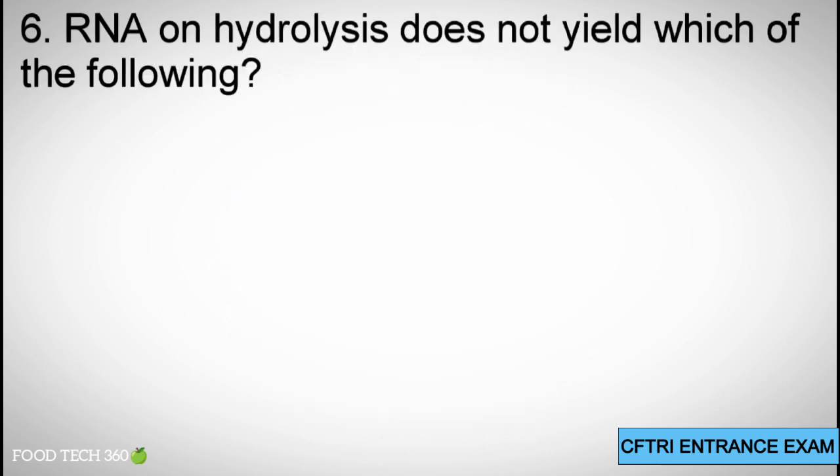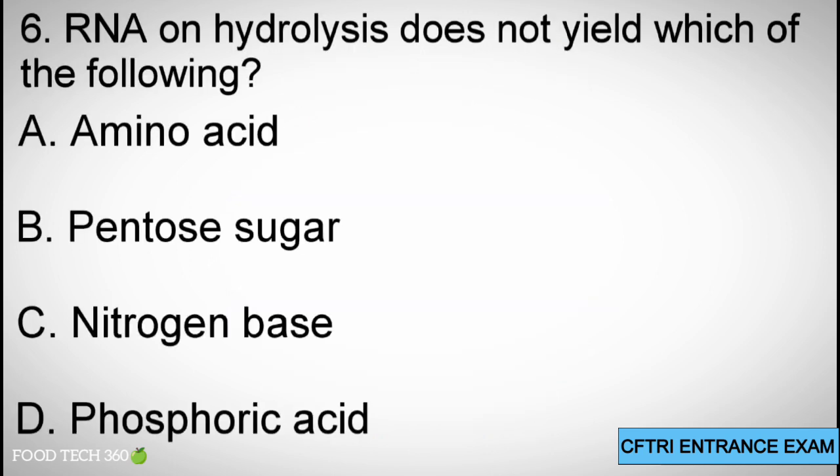Question 6: RNA on hydrolysis does not yield which of the following? A. Amino acid, B. Pentose sugar, C. Nitrogen base, D. Phosphoric acid.